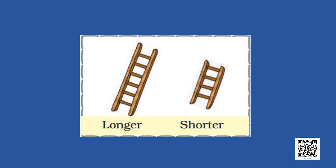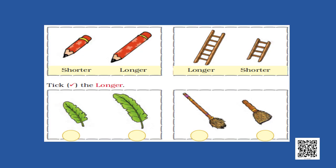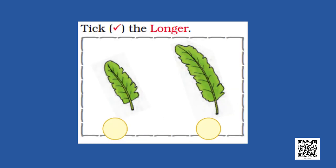Here are two objects — ladders. Can you tell me which one is longer and which one is shorter? Try to find how can we say that this one ladder is longer and the other is shorter.